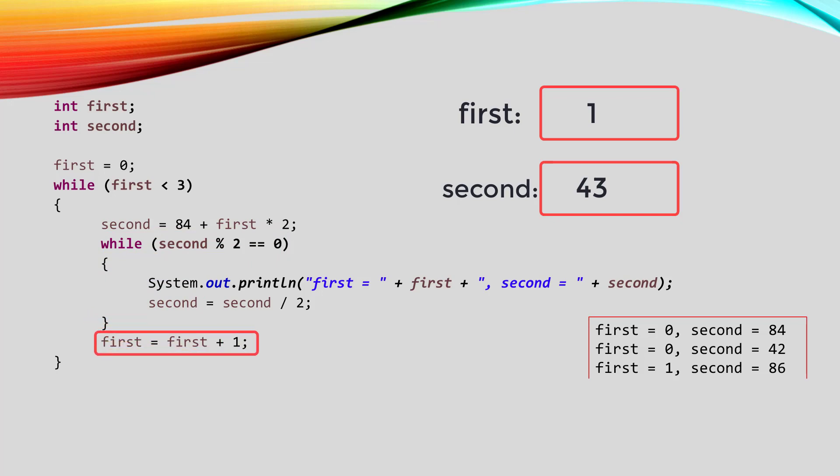First gets incremented, it's now two. The outer loop ends, so we go back up to its condition to check if first is less than three, which it is. So we go into the loop again. This time, first times two will be four, so 84 plus four is 88, and that is what will be stored in second.